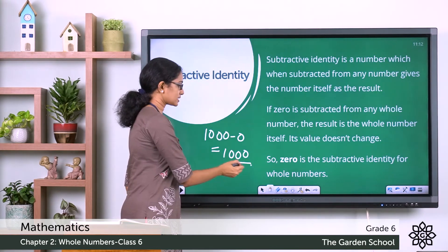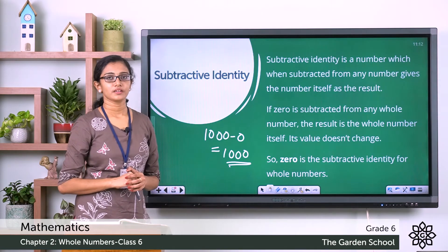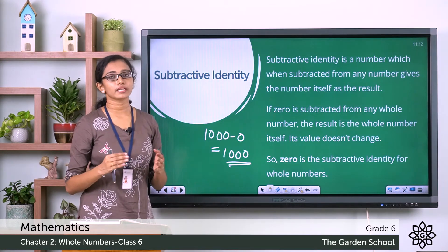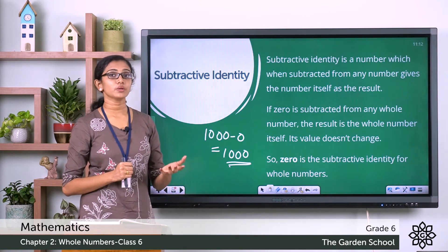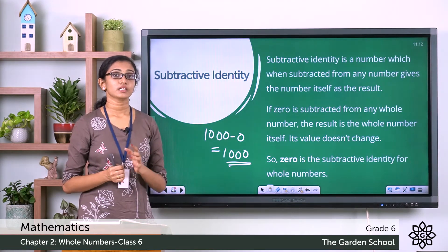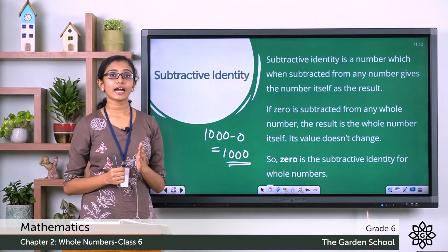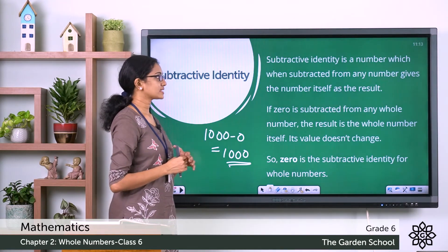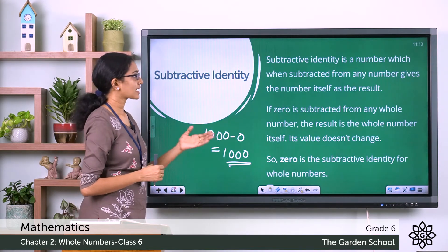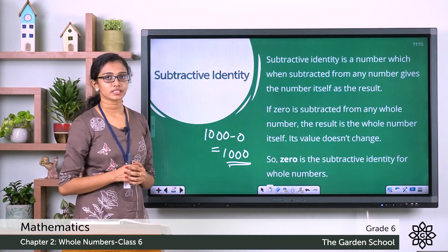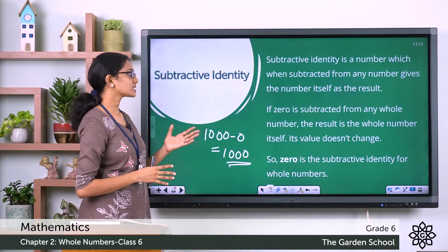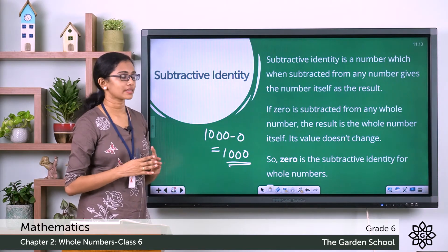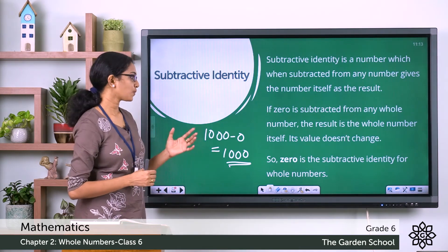The end result remains the same — it is the given number itself. When you subtract 0 from any number, the number remains the same; no change happens to its value. So you can say 0 is the subtractive identity for subtraction of whole numbers. Subtractive identity is a number which, when subtracted from any number, gives the number itself as the result. If 0 is subtracted from any whole number, the result is the whole number itself — the identity of the number remains the same.